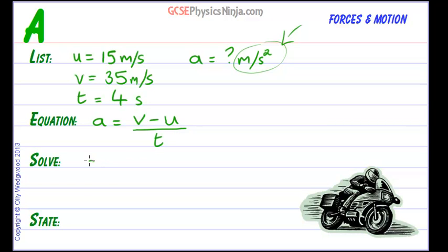Let's put the numbers in and solve the equation. So a equals 35 minus 15 divided by 4. Now if we simplify that, that's going to give us 20 over 4.